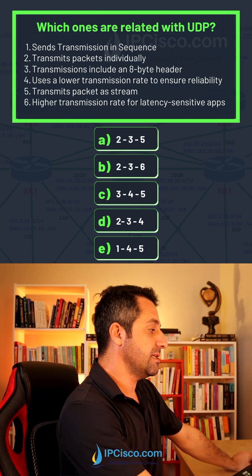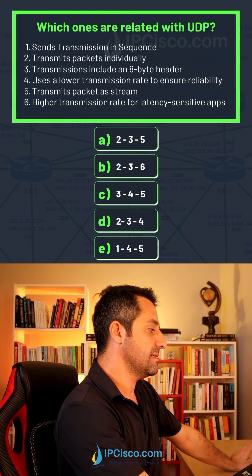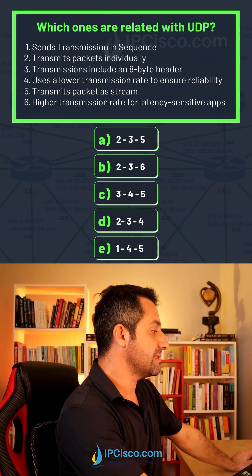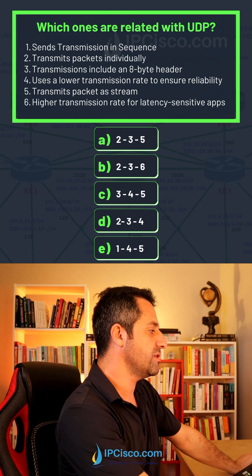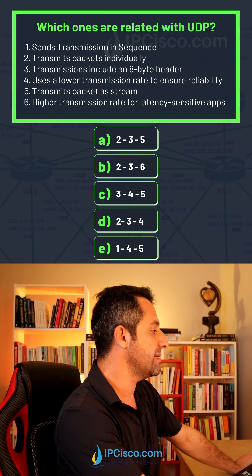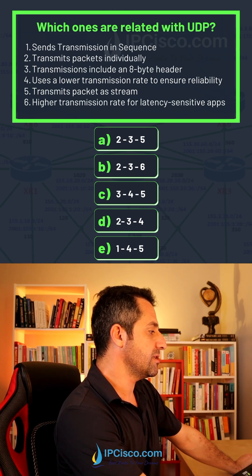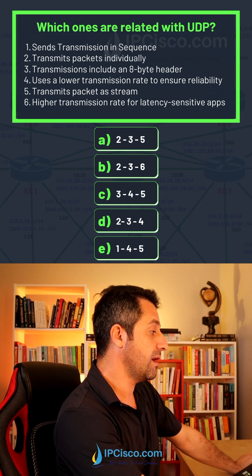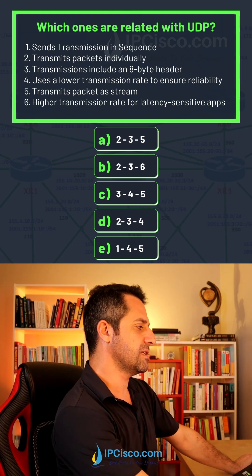Sense transmission in seconds — yes, this is the property of TCP. Transmits packets individually — this is true for UDP. Transmission includes an 8-byte header — yes, UDP header is 8 bytes. Uses lower transmission rate to ensure reliability — not true. Transmits packets at stream — not true. Higher transmission rates for latency-sensitive applications — yes, this is also true.